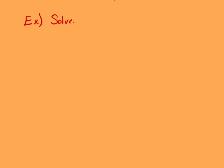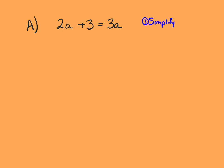For the example, we're going to solve our first equation: 2a plus 3 equals 3a. First, look to see if you can simplify any — there's nothing we can do there, so I'm going to cross it off. And then second, I'm going to get rid of a variable term.